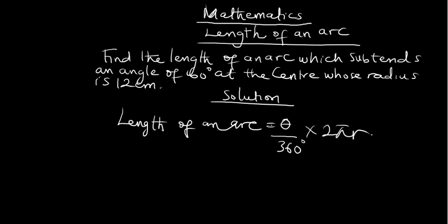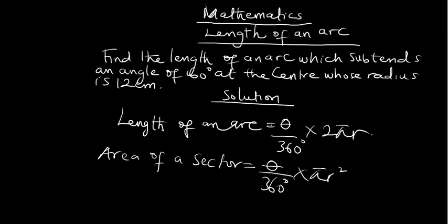Length of an arc is different from area of a sector. Area of a sector is theta over 360 degrees times pi r squared, while length of an arc is theta over 360 times 2 pi r.